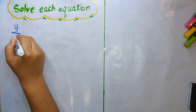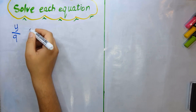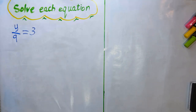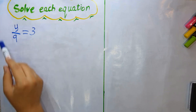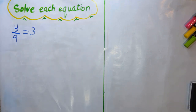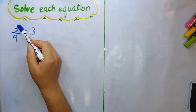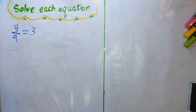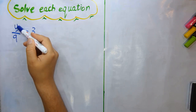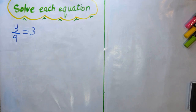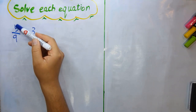Next example: y/9 = 3. This equation has a different form — now we have a division. y divided by 9. To solve, we still need to remove any number around the variable. We have 9 under y.